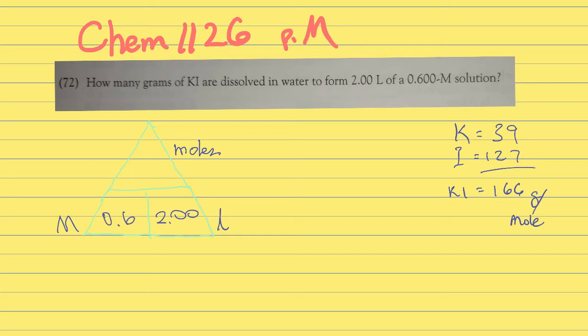Problem 72 asks: How many grams of potassium iodide (KI) are dissolved in water to form 2.00 liters of a 0.600 M solution?